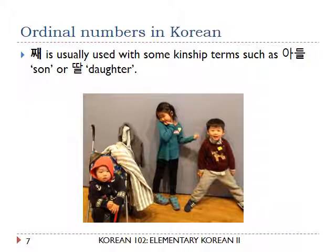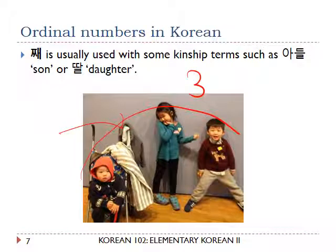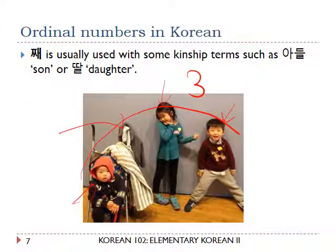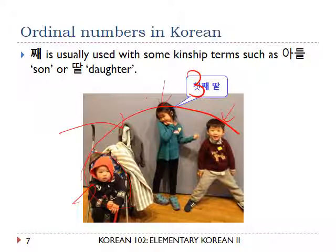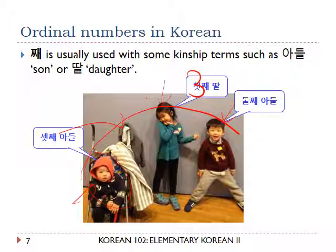For example, let us look at this picture. In this picture, there are three children — they are siblings. The girl in the middle is the first one, this is the second boy, and this little boy is the last one. 한국말로: first daughter is 첫째 딸, the second boy is 둘째 아들, and the last boy is 셋째 아들.